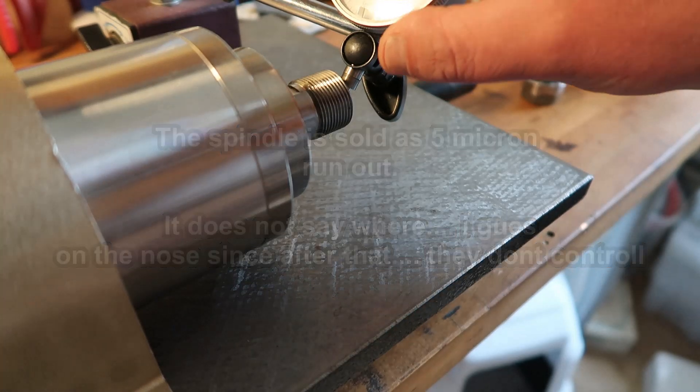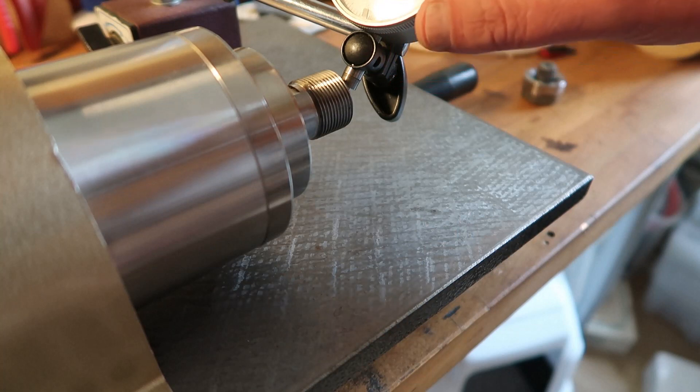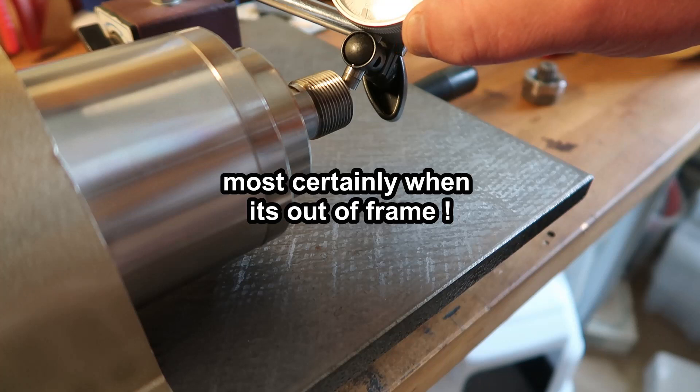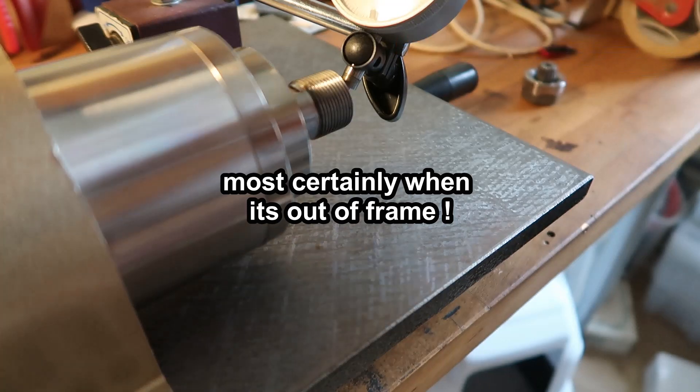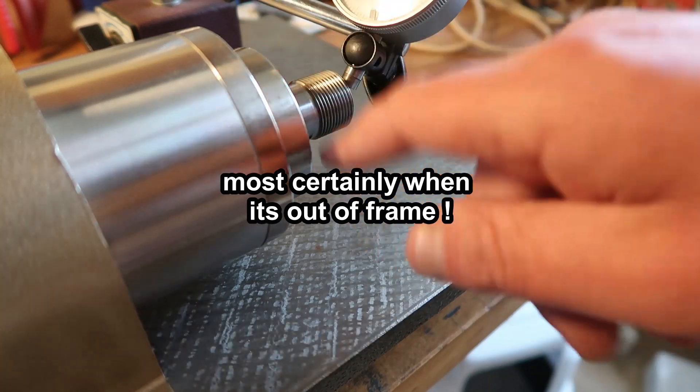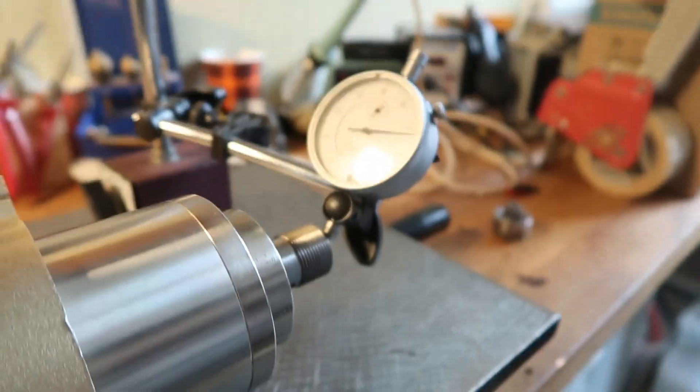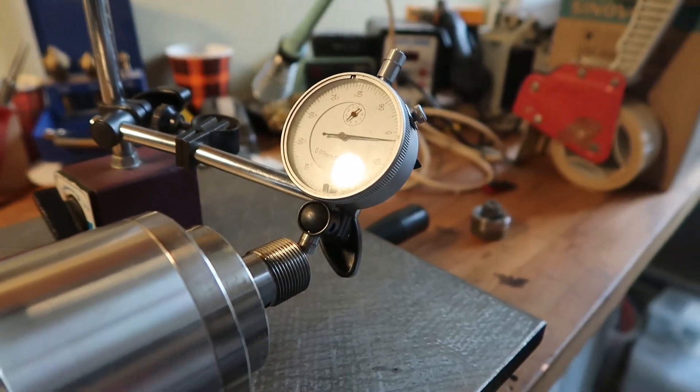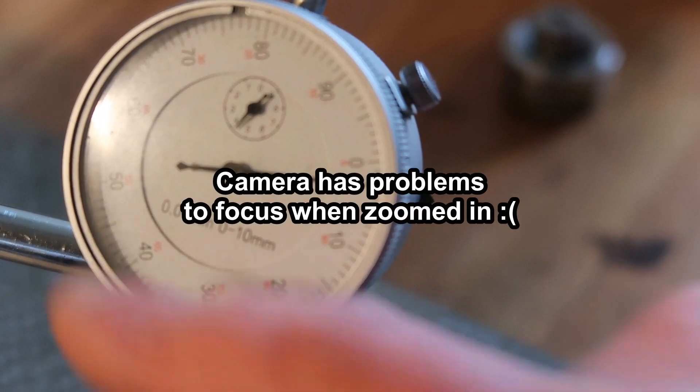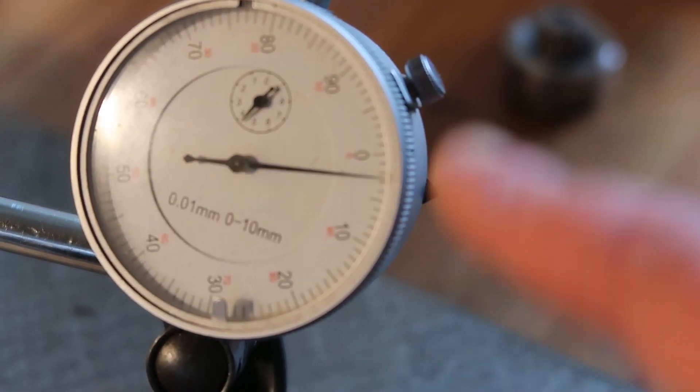So half of one of those lines. You can see this dial indicator is pretty hard to put to zero, so I might not even try. But if I turn it something like this, now I'll turn the spindle nose and see how much it's moving.